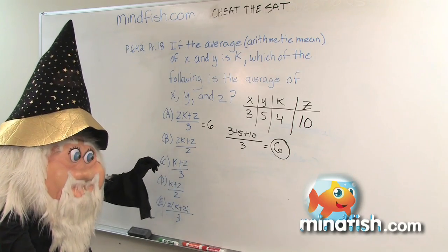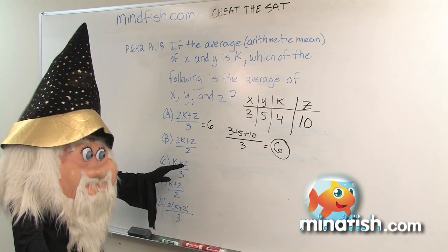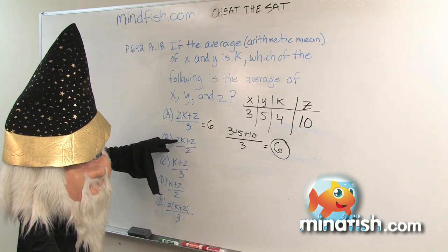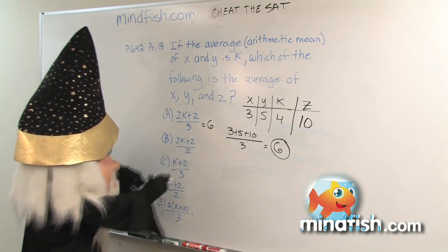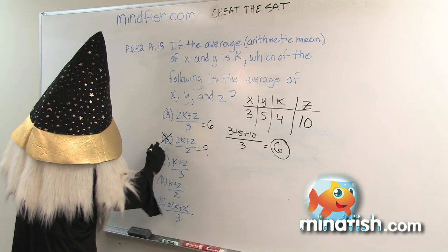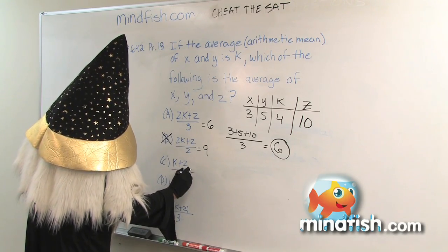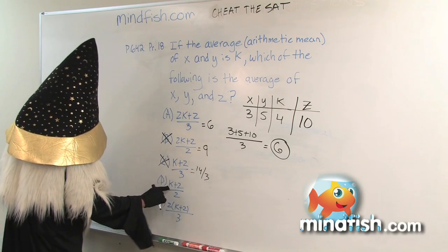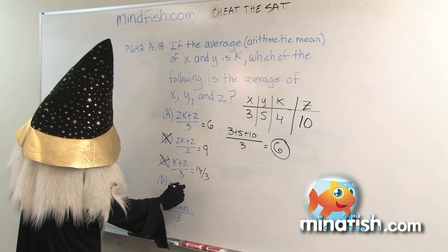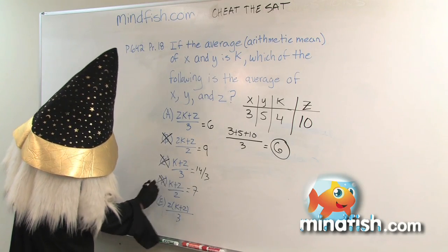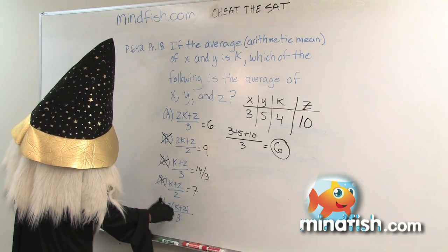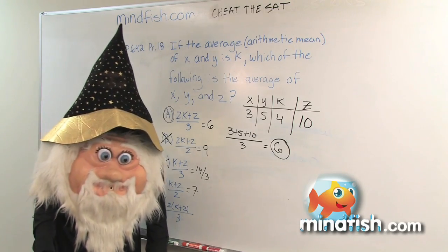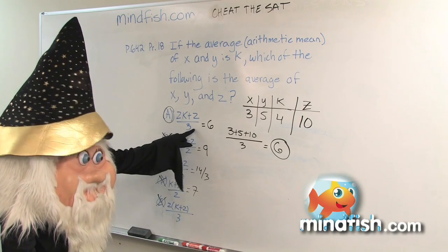Now we don't pick the first one that works. Occasionally more than one will. So we want to make sure that none of the other ones work. This one gives us 8 plus 10 is 18 over 2. This gives us 9, so that doesn't work. This gives us 14 over 3. That doesn't work. This gives us 14 over 2, which is 7. That doesn't work. And this gives us 28 over 3, and that doesn't work. So we can be confident that our answer is indeed A, 2K plus Z over 3.